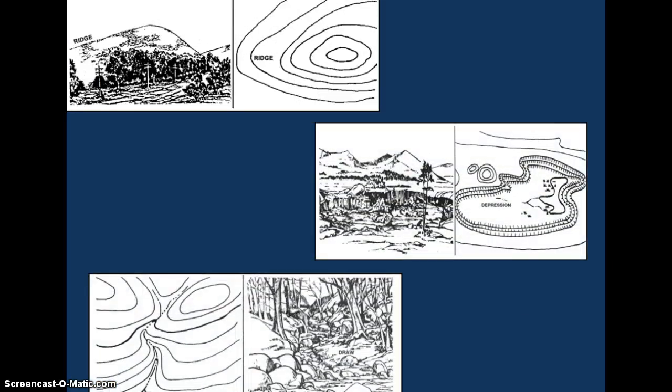Here's a couple other examples of what these landforms would look like. Looking down, you've got your concentric circles. That's going to be your mountain. In this one, you can see where there's kind of a bend in the line is the ridge.